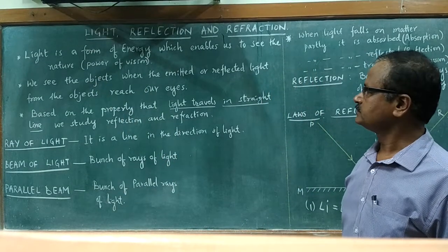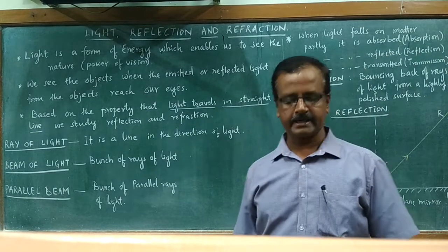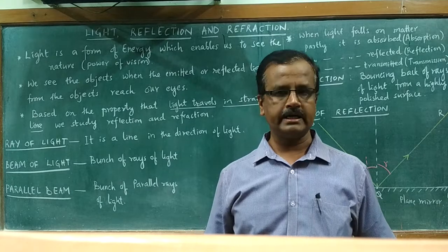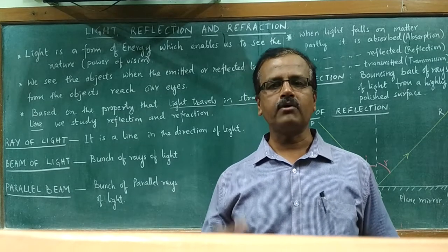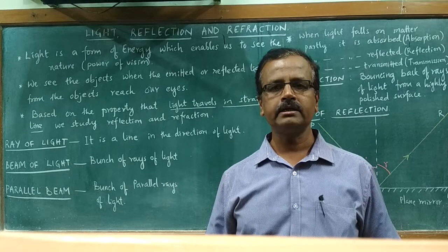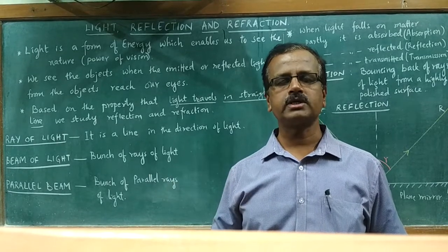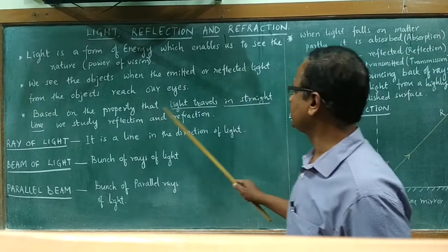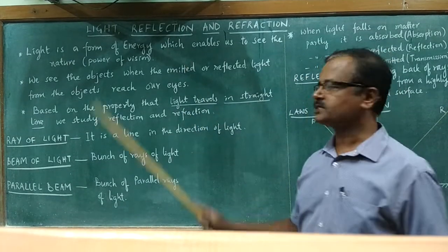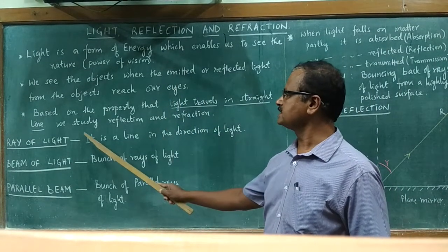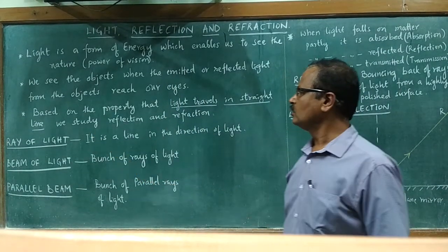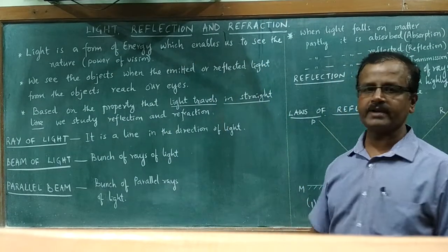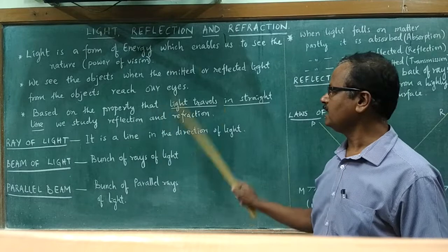We have already studied in lower classes that light travels in a straight line. Whenever light falls on any opaque object, it casts a sharp shadow of that object, which shows that light travels in a straight line. Based on this property of light traveling in a straight line, we mainly study in this topic reflection and refraction.